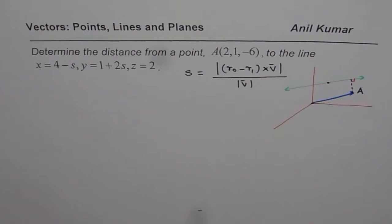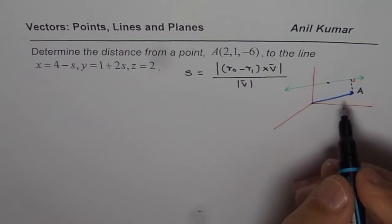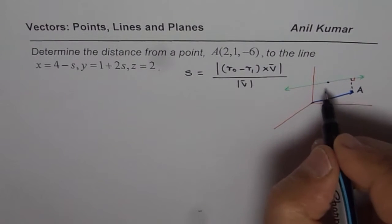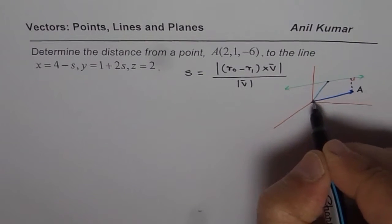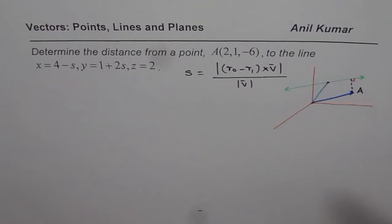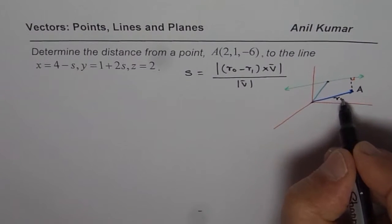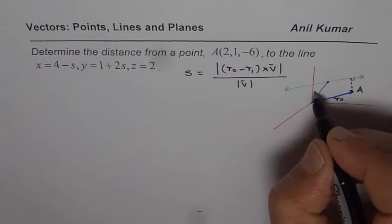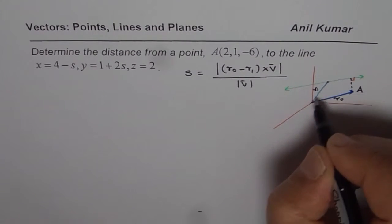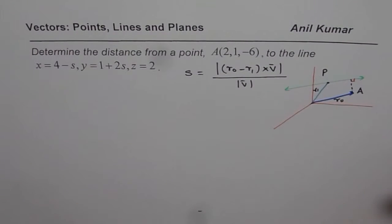and the direction from the origin to the point. So these are the two directions. Which we are calling as R0 is this direction from 0 to A and R1 is direction from A to any point P, for example.